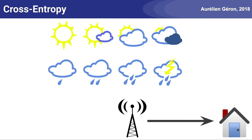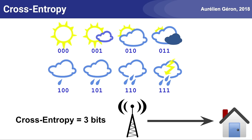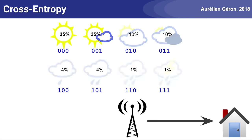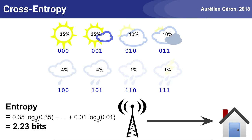Now let's talk about cross-entropy. It is really quite simple — it's just the average message length. For example, if the weather station encodes each of the 8 possible options using a 3-bit code, then every message will have 3 bits, so the average message length will be 3 bits, and that's the cross-entropy. But now, suppose that you live in a sunny region where each day there's a 35% chance of being sunny and only 1% chance of thunderstorm. You can compute the entropy of this probability distribution and find that it is equal to 2.23 bits. So it's a shame the weather station is sending 3 bits per message on average, when the weather's entropy is just 2.23 bits — on average we send 3 bits, but the recipient gets only 2.23 useful bits.